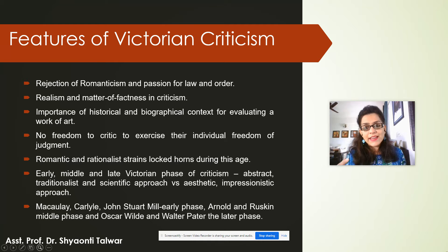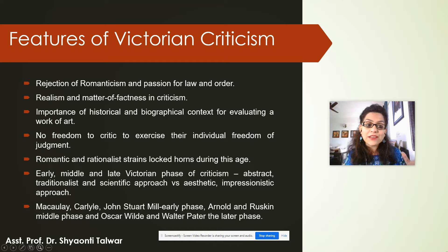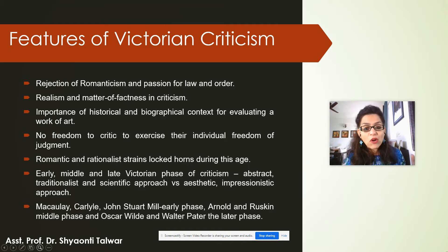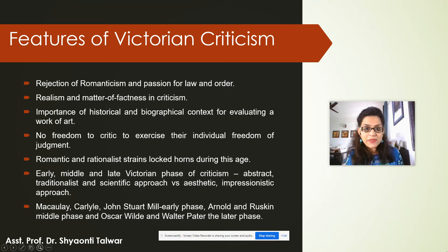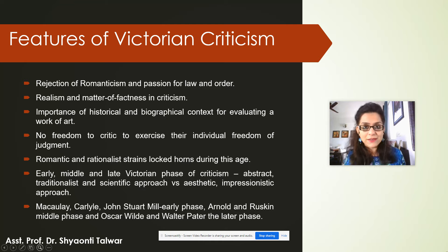In the Victorian age, Victorian criticism reflected a passion for law and order. There was an element of realism and matter-of-factness in the criticism, and it gave a lot of importance to historical and biographical context for evaluating a work of art. So unlike the Romantic age, where the critic exercised complete autonomy and freedom, in the Victorian age the critic had to go back to set standards or parameters of critical evaluation. So it was no longer impressionism to that extent.